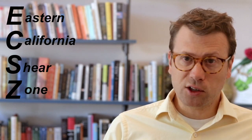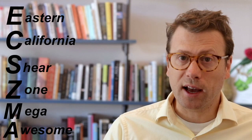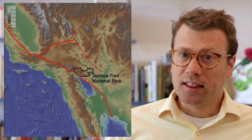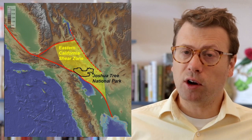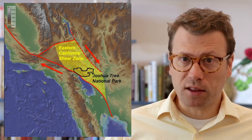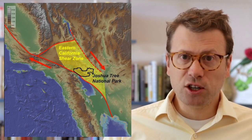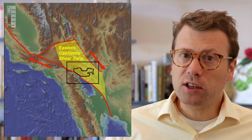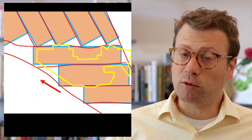If geologists started calling it the Eastern California Shear Zone Mega-Awesome, they could use the acronym ECSMA. That's the worst idea I've ever heard. The Eastern California Shear Zone is about 125 kilometers wide and has an overall right-lateral sense of motion — meaning if you are standing on one side of the fault looking across to the other side, it's moving to your right. As the edges of the shear zone move, faults within the shear zone accommodate the motion and the blocks within the shear zone are rotated and tilted.